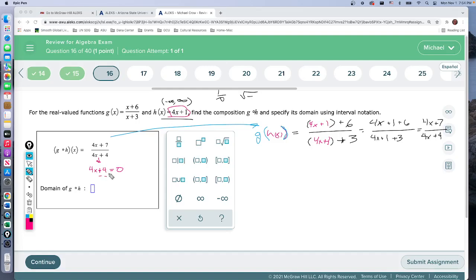Okay, so then we would subtract 4 from both sides. Don't need an equal, subtract 4, so we get 4x equals negative 4, and then we divide by 4. So if x were equal to negative 1, we would have division by zero in the final result.